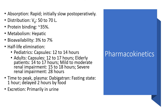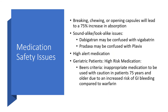Pharmacokinetics: Absorption is very rapid. Volume of distribution is 50 to 70 L. Protein binding is 35%. It is metabolized hepatically. Bioavailability is 3 to 7%. Half-life elimination: pediatrics 12–14 hours, adults 12–17 hours, elderly 14–17 hours, mild to moderate renal impairment 15–18 hours, and severe renal impairment 28 hours. Time to peak plasma concentration: fasting is 1 hour, delayed by 2 hours with food. Excretion is primarily in the urine.